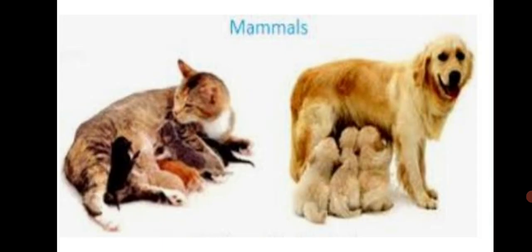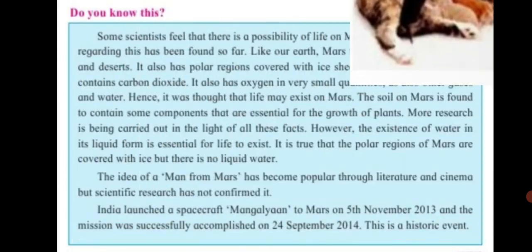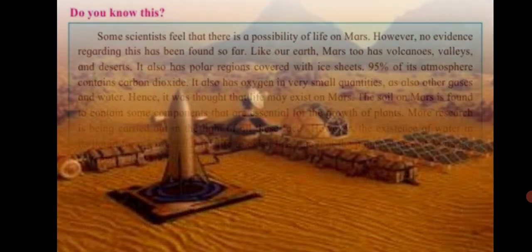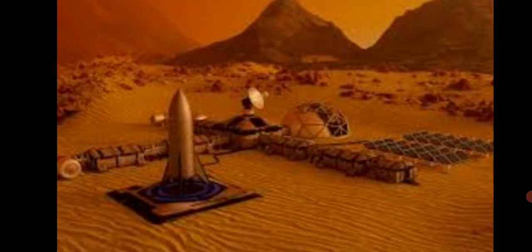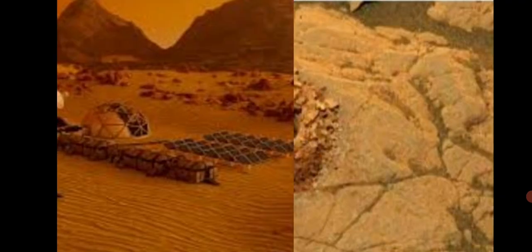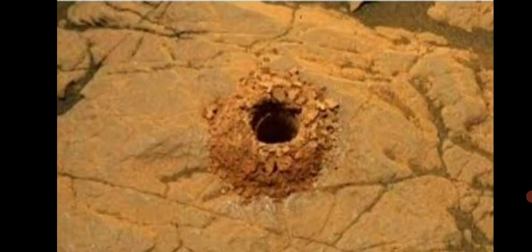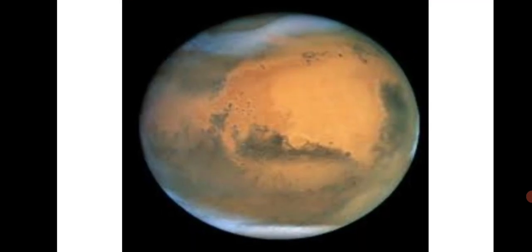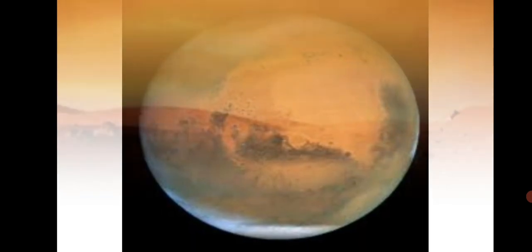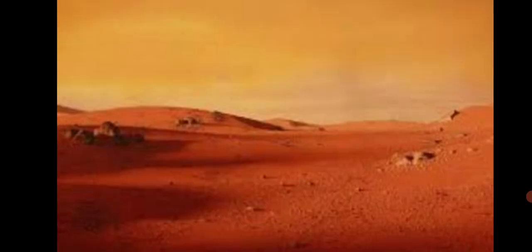Now that you have learned about life on Earth, let's learn something about the planet Mars. Some scientists feel that there is a possibility of life on Mars. However, no evidence or proof regarding this has been found so far. Like our Earth, Mars too has volcanoes, valleys, and deserts. It also has polar regions covered with ice sheets. 95% of its atmosphere contains carbon dioxide, and it also has oxygen in very small quantities, as well as other gases and water.